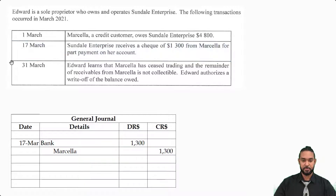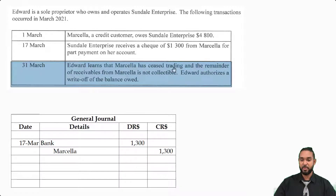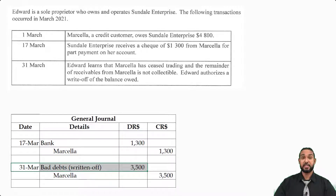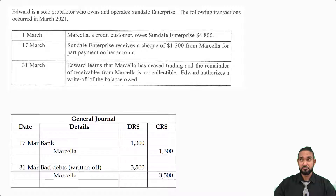Now let's take a look at the 31st. Edward learns that Marcella has ceased trading and the remainder of receivables from Marcella is not collectible. Edward authorizes a write-off of the balance owed. So we're writing off the debt as bad, which means we're going to debit the bad debts expense account and credit Marcella for $3,500. We're debiting bad debts because it's an expense that has now come into existence, and to record an increase in an expense you have to debit the expense account. We credit Marcella because we are totally removing it from the books, reducing it to zero.